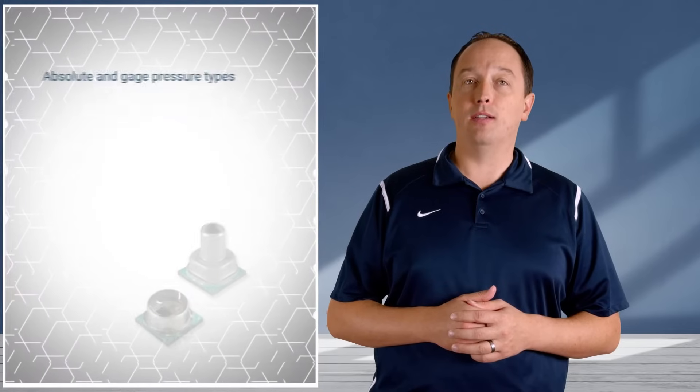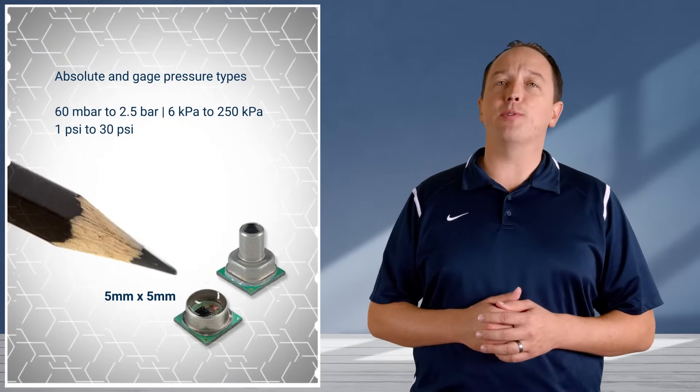Honeywell's MPR series micropressure board mount pressure sensors are compact, compensated, and amplified pressure sensors with 0.25 percent accuracy and a total error band as low as 1.25 percent. At just five by five millimeters, the MPR series offers an exceptionally small form factor.